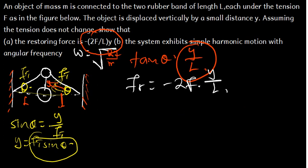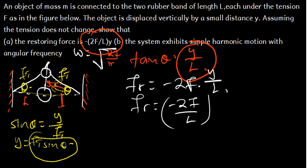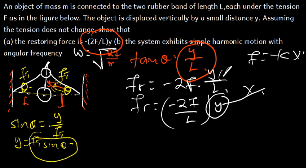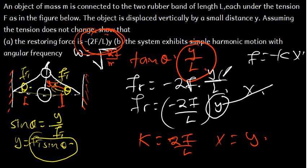The tension force F and length L are both constant, while Y is the displacement that can vary. Rearranging, the restoring force equals negative (2F/L)·Y. Comparing this to the general formula F = −KX, we can identify that K equals 2F/L and X corresponds to Y. This completes Part A, showing the restoring force is given by negative (2F/L)·Y.